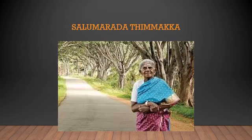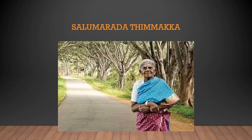As you can see in the picture, her name is Salumarada Timmakka. She is the proud daughter of Karnataka and is also known as Vrikshamataka throughout the country. She is well known for protecting the trees and has planted thousands of trees throughout her lifetime. She planted small plants, watered them every day, and took care of them like her own children.